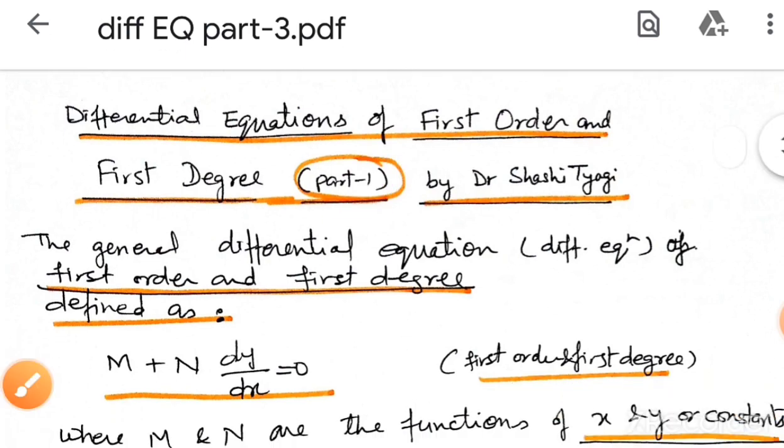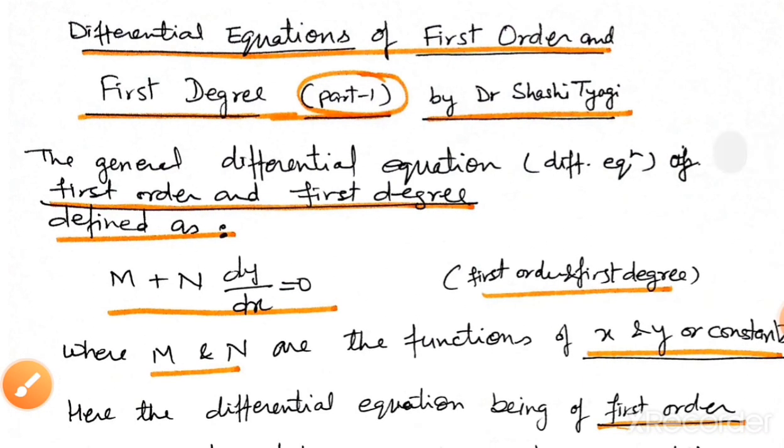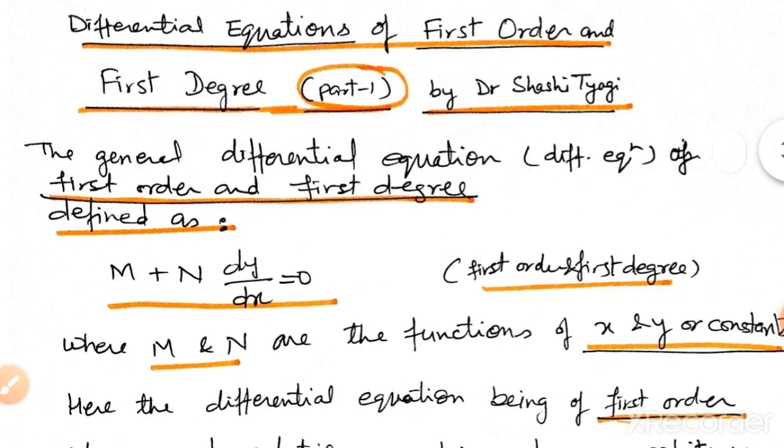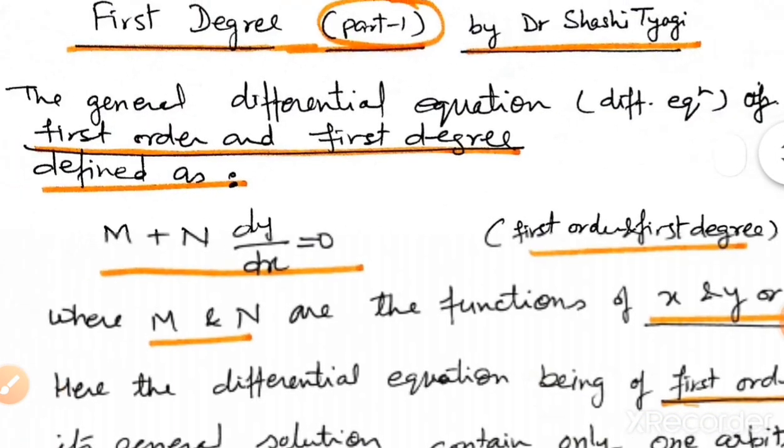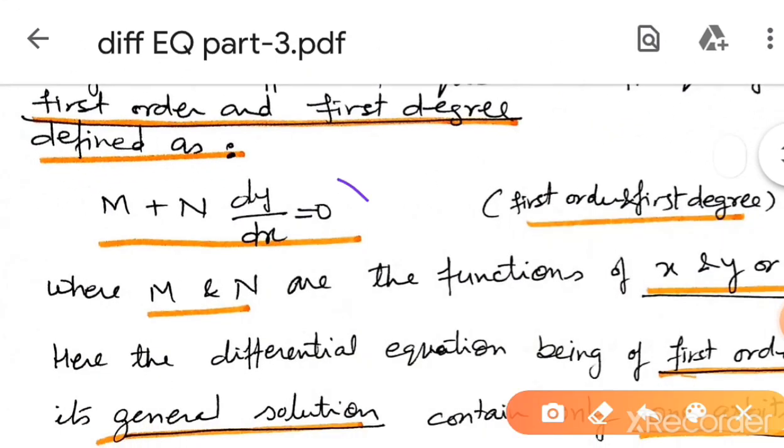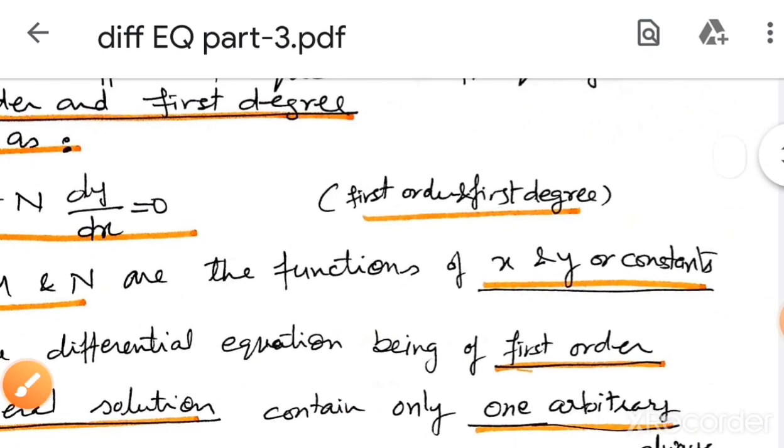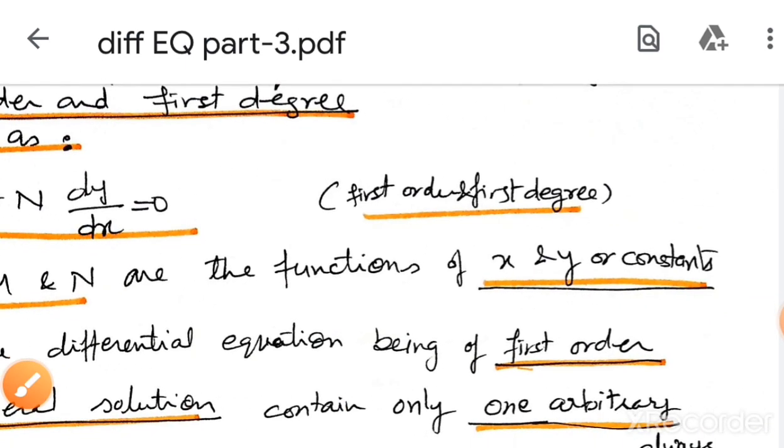First of all I define the general differential equation of first order and first degree is of this type m plus n dy by dx equal to zero where m and n are the function of x and y or any constant.